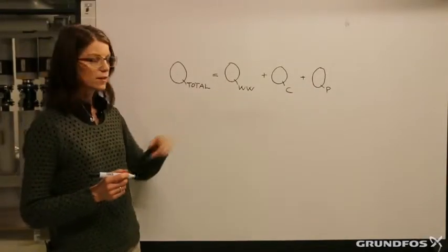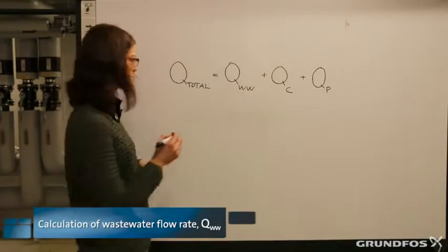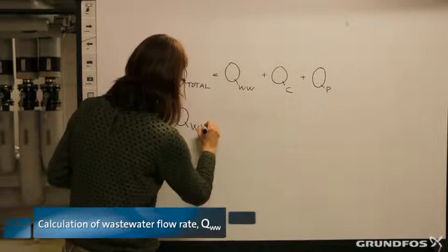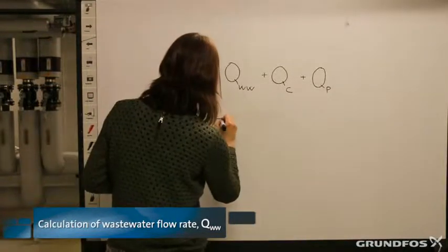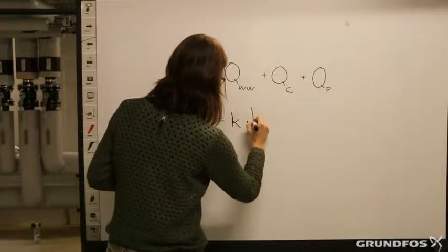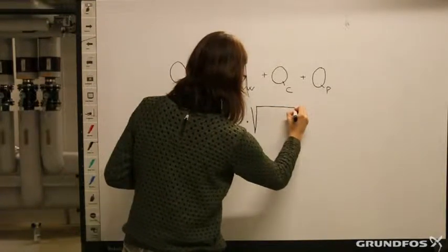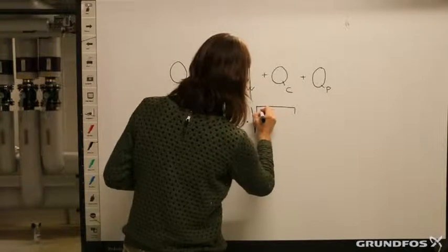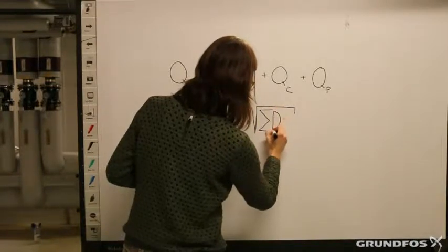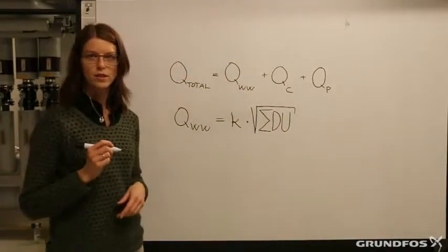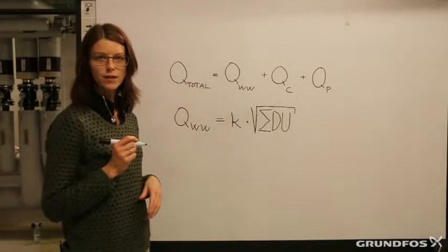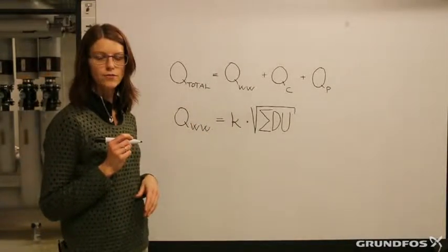The calculation of Q_wastewater is done by this formula: Q_wastewater equals a K factor multiplied by the square root of the sum of the discharge units. We will look into these factors and how to get these values.